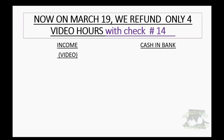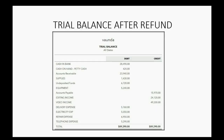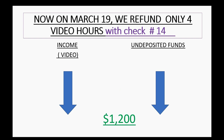Now, let's imagine on March 19th we refund to Betty only four of those 16 hours, and in order to do that, we write her check number 14. When we do that, video income will go down because if we're giving back money for a video job, we earned less video income. And cash and bank will also go down. The amount that both of those accounts will change is $1,200. So after the refund, cash and bank will decrease by $1,200 and become $27,290. Video income will decrease by $1,200 and become $48,000 even.